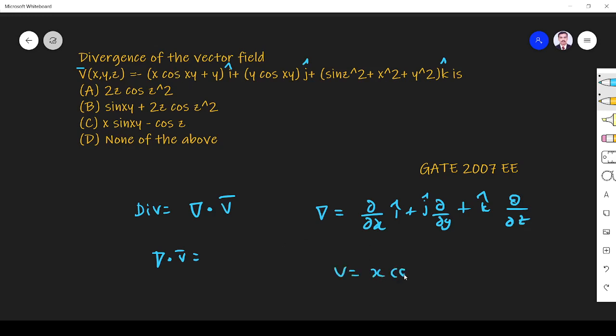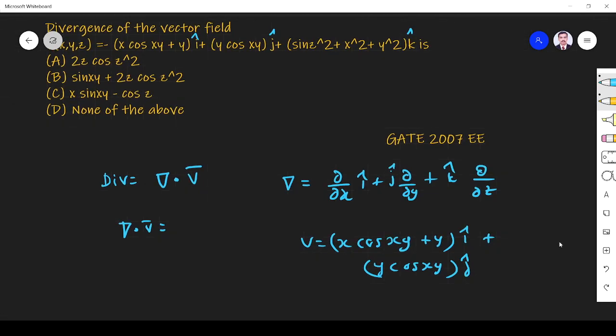V is x cos xy plus y i vector plus y cos xy j vector and plus sin squared z plus x squared plus y squared k vector.